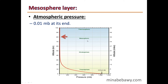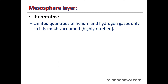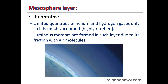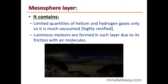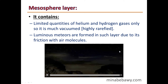The Mesosphere contains only limited quantities of helium and hydrogen gases, making it highly rarified — almost empty. Luminous meteors are formed in this layer due to their friction with air molecules.